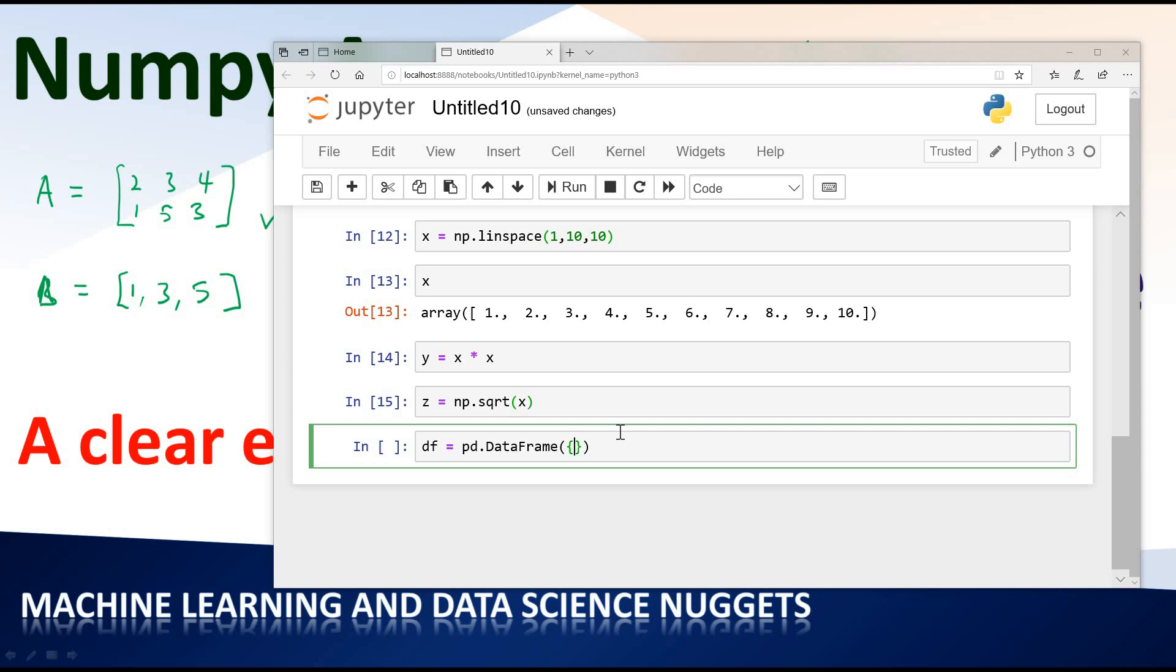In this case, the header is x. For x, you use a colon and then specify the series of values for x, which is x. Now we move to the second column. The header is y and we specify the series of values for y, which is y. And we go for the last one, z, and we specify colon the series of values for z.